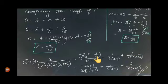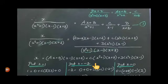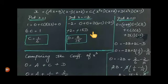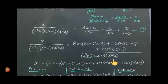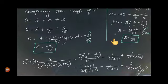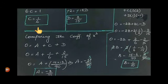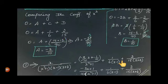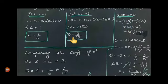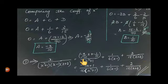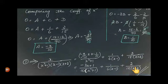Now substitute all values back into equation 1. A = -3/10, B = 1/10, C = 1/6, D = 2/15. So the answer is: x / [(x²+1)(x-1)(x+2)] = (-3x+1) / [10(x²+1)] + 1/(6(x-1)) + 2/(15(x+2)). Thank you.